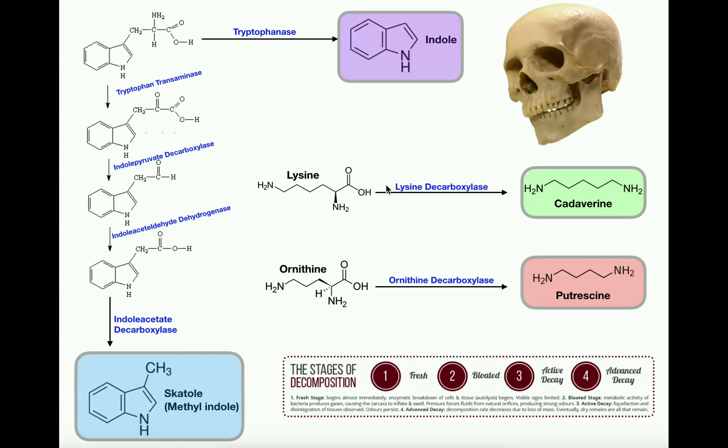Let's look at the first two simple pathways. The first involves lysine, one of our 20 proteinogenic amino acids. The enzyme lysine decarboxylase removes the alpha-carboxyl group — the only carboxyl group on lysine — leaving a terminal diamine called cadaverine. Cadaverine is generally not produced by humans in any considerable amount; lysine is degraded through a very different catabolic pathway in mammals. This is a purely bacterial reaction, and cadaverine smells really bad, as we'll discuss.